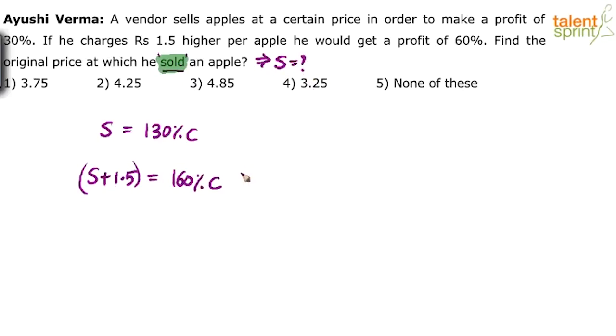Can I break this 160% as 130% of cost price plus 30% of cost price? Why am I doing so? For simple reasons that the calculation becomes easy. I already know that selling price is 130% of cost price. On the right hand side, I have 130% of cost price. On the left hand side, I have S which is 130% of cost price. Both get cancelled. So I can now say that 1.5 is actually 30% of the cost price.